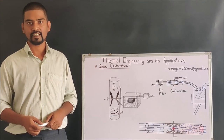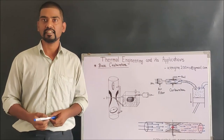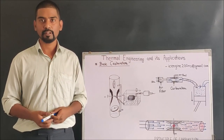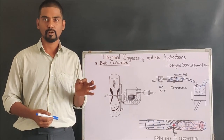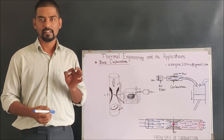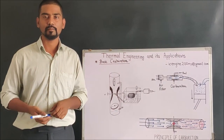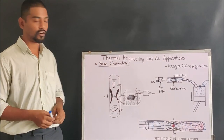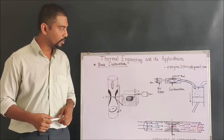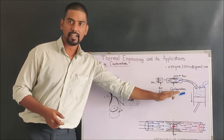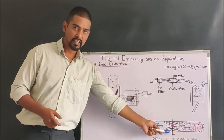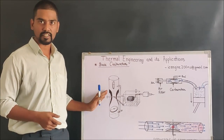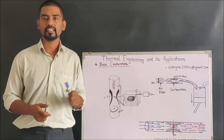That basic idea behind combustion in an SI engine is the process we call carburetion — the mixing of air and fuel in a proper amount to form a combustible mixture. A combustible mixture is one that is able to burn completely. Today we are going to discuss the basic layout of the carburetor, the principle of carburetion, and the working of the simplest carburetor, which is very important before moving to advanced carburetors.